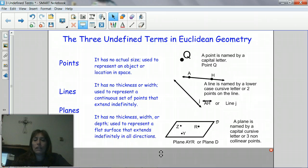Over here where I have my example, I have three points in the plane. I have Z, Y, and R, and remember those are labeled by capital letters, and over here I have one cursive letter capital. So a plane can be named by either a cursive capital letter or three non-collinear points.